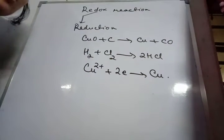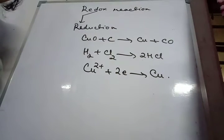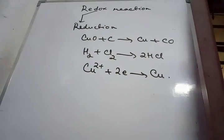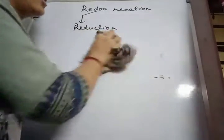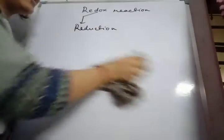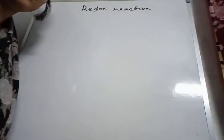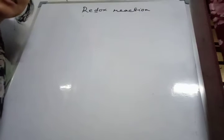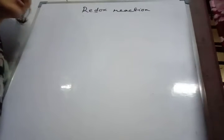As per modern concept, we have to define reduction and oxidation in terms of oxidation number. First, we are going to discuss what is oxidation number. The oxidation number of an atom represents the charge present in an atom of an element in its ion or when it is combined with some other atoms.